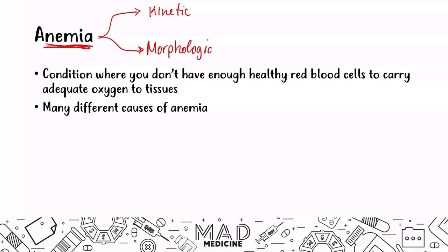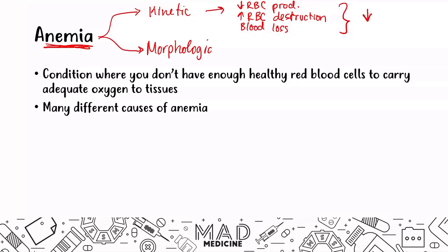In the kinetic approach, anemia is usually due to decreased red blood cell production, an increase in red blood cell destruction, or it's going to be because of blood loss. All of these are going to manifest with a decrease in your hemoglobin concentration or your hemoglobin amount.